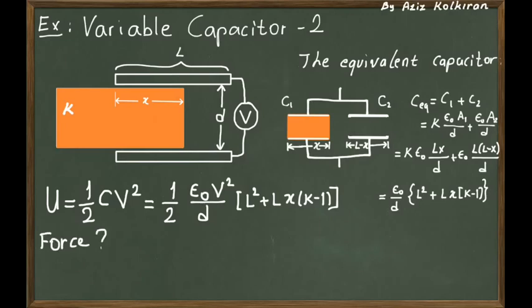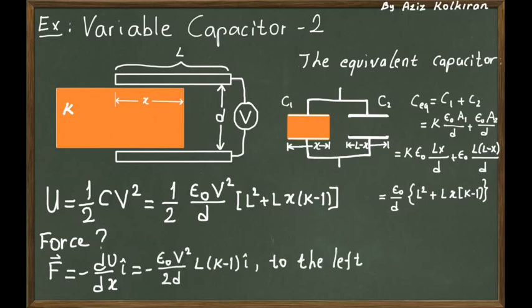We know that the force is just the derivative of this potential with respect to x. Of course, there is a minus sign in the definition, so the force as a vector is equal to minus dU/dx in the x direction. So let's calculate this, whether we must provide the force, or the capacitor is pulling the dielectric into itself. When you calculate this derivative, it's easy because it's linearly dependent on x. We get minus epsilon 0 V squared divided by 2d, L times K minus 1.